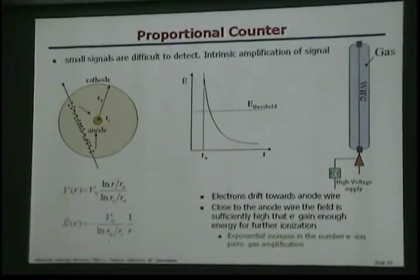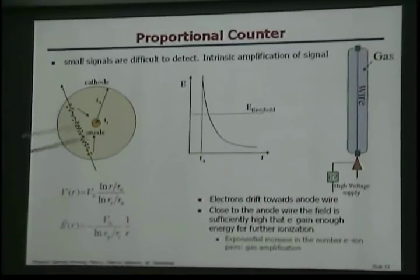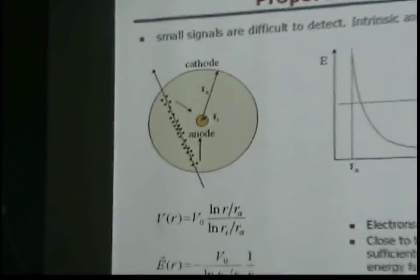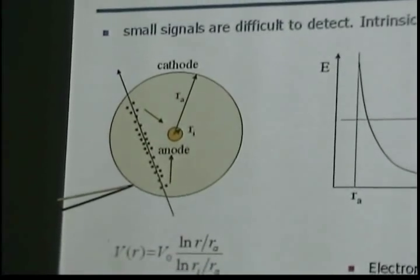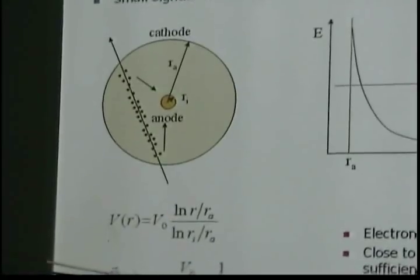I don't know if you learned this already in electromagnetism in school, but suppose you have a circular geometry. You've got an anode, a little wire, and you take a little tube, say an aluminum tube around it, and you put that at ground.